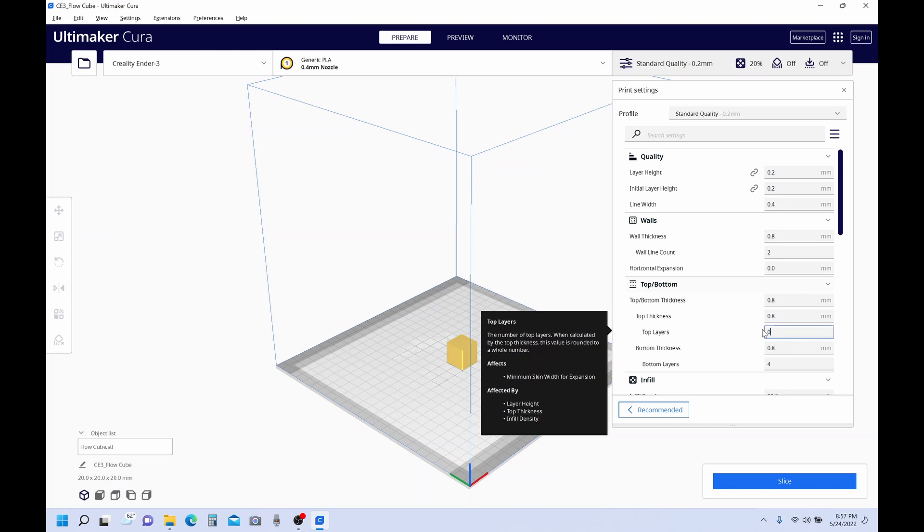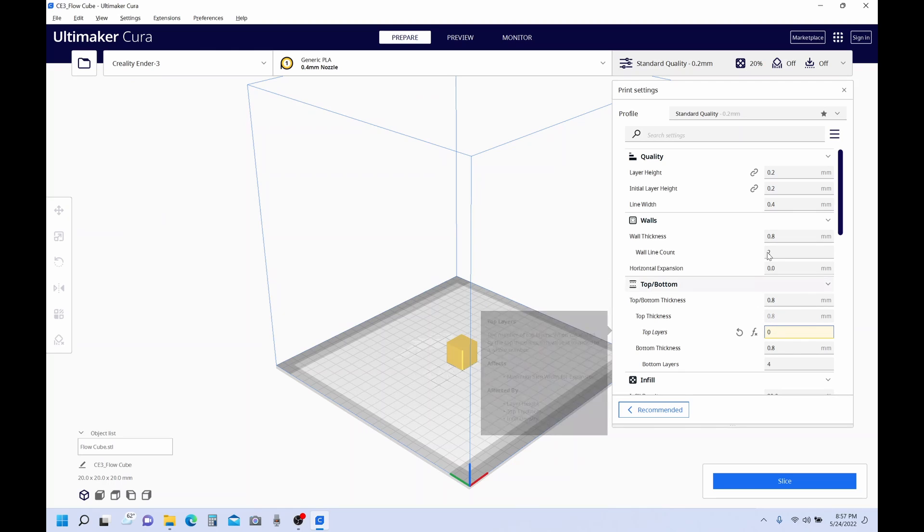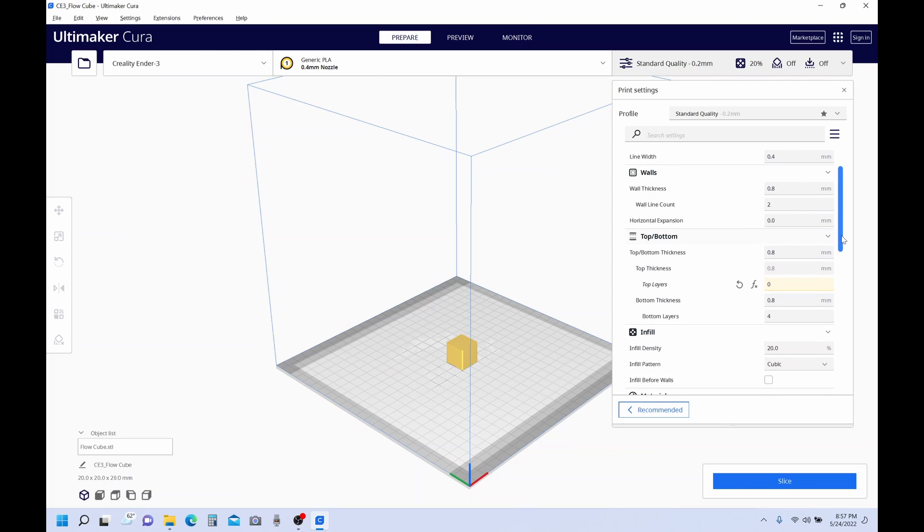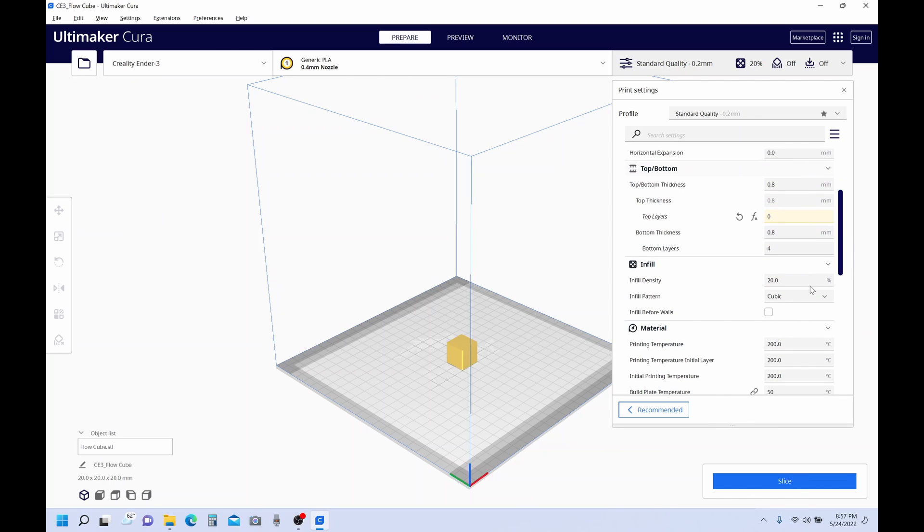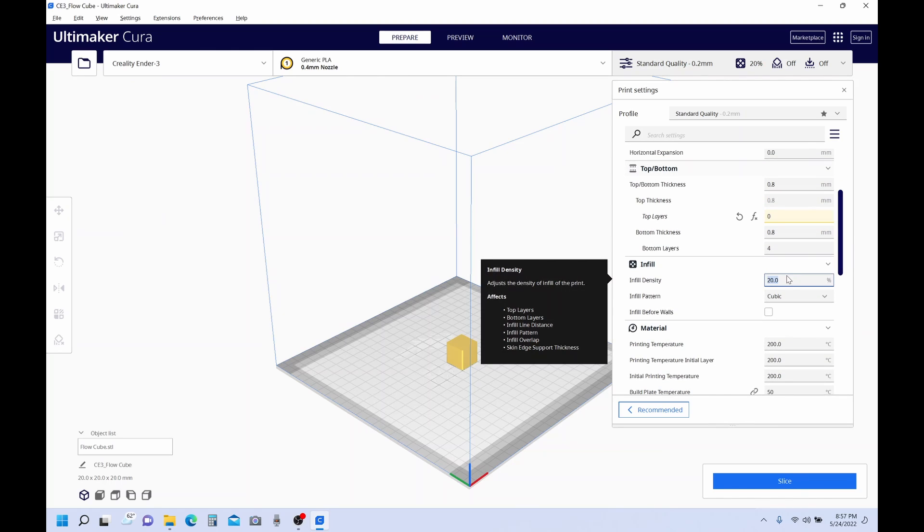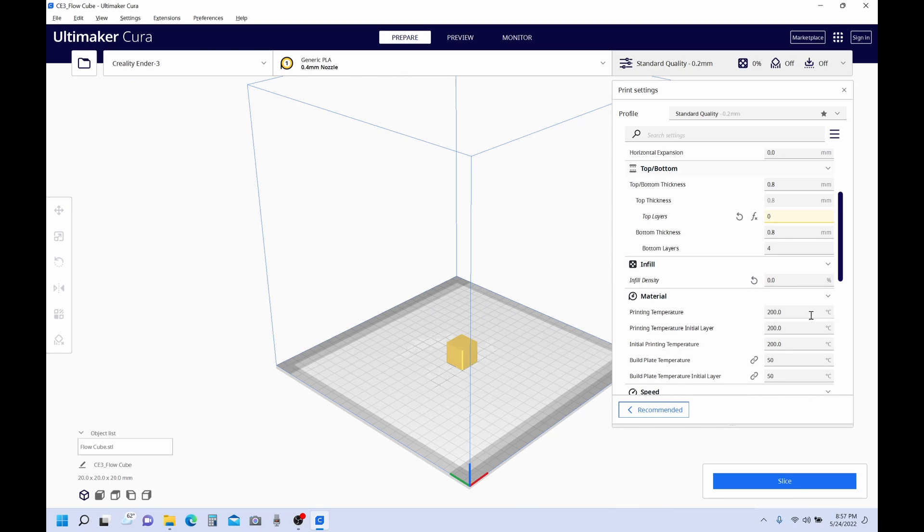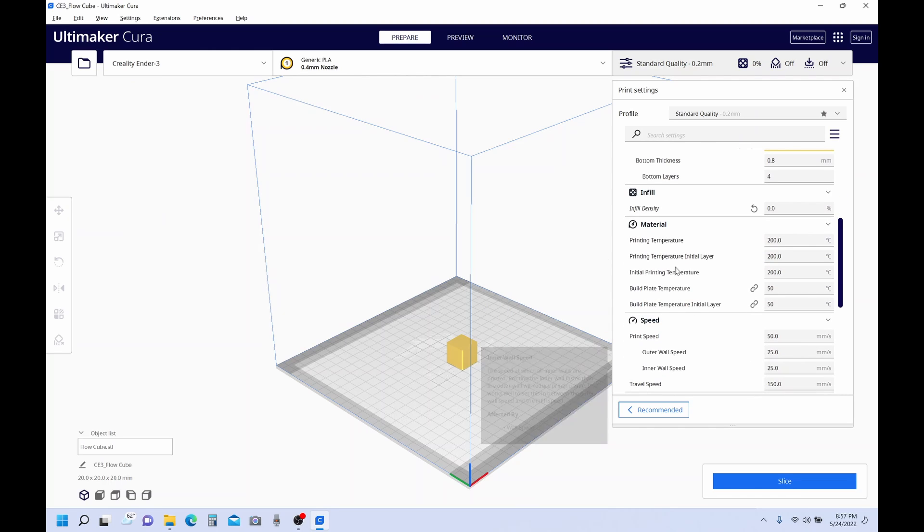It's going to give us a total wall thickness of 0.8. Our top layers, we want to be 0. We don't want this thing to have a lid. We want to change our infill to 0%.